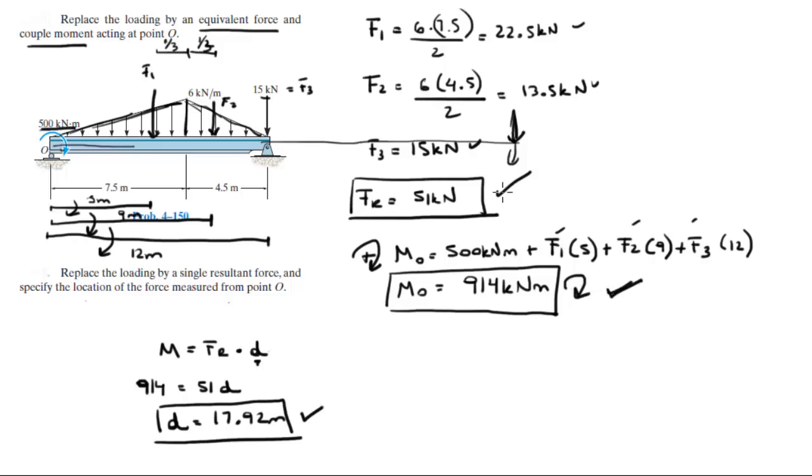So that additional moment pushes it out of the assembly to this theoretical distance d. So it's 17.92 meters, the moment is 914 kilonewton meters, and the resultant force is 51 kilonewtons. Final answer.